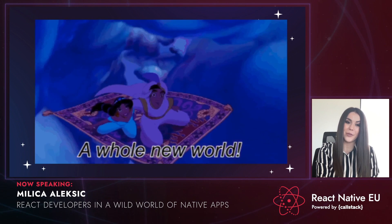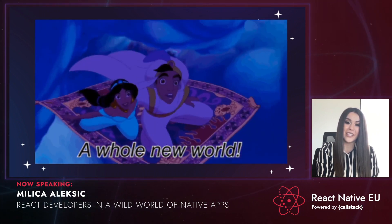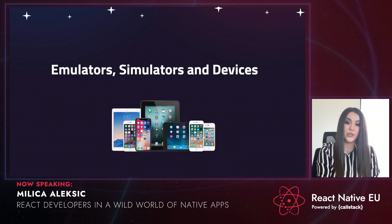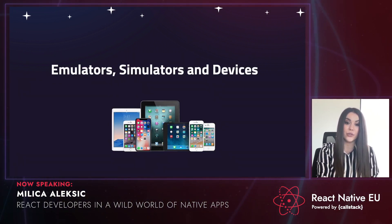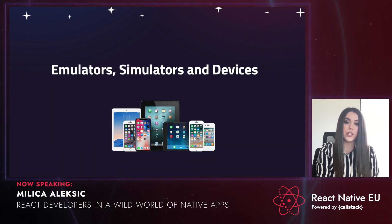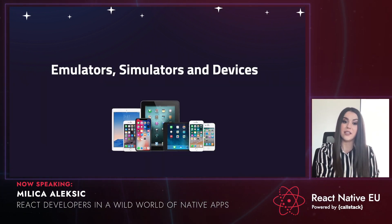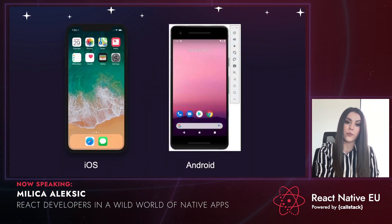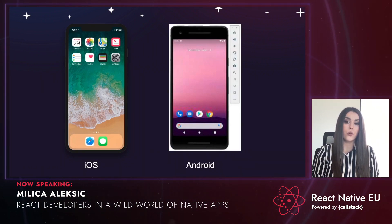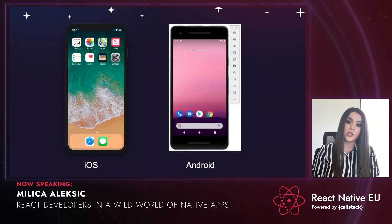The first difference: for web development you only need the browser, but for mobile development you need to run your code on a mobile device. For web, it's easy to open a browser and start developing. But for native, you must always think about the platform — iOS and Android. You can use the Android Emulator from Android Studio, or the iOS Simulator from Xcode.